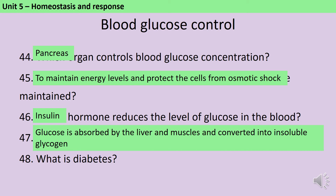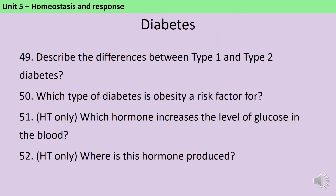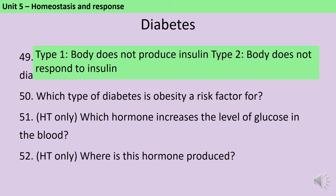Diabetes is a chronic illness meaning you have it for your whole life, and if you have diabetes your body is unable to control the levels of glucose in the blood. If you have type 1 diabetes, your body stops producing insulin or doesn't produce enough, whereas if you have type 2 diabetes your body doesn't respond to insulin. Being obese is a risk factor for type 2 diabetes. For higher tier, you also need to know that to increase blood glucose levels the pancreas produces glucagon.